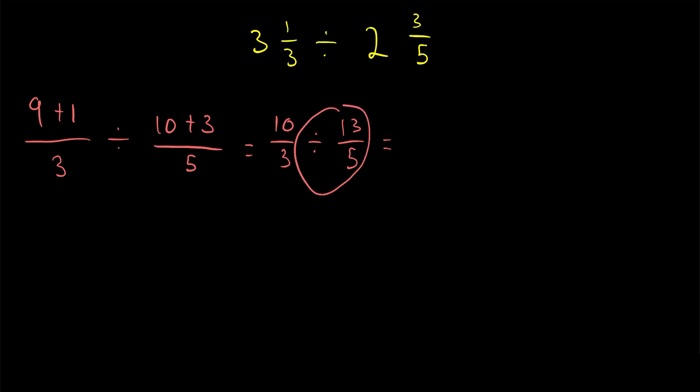Then dividing by a fraction, as we went over, is the same as multiplying by the reciprocal. So this equals 10/3 times 5/13. We multiply across the numerators and denominators, which gives us 50/39. 50 and 39 have no common factors, so this is as simple as we're going to get. And that is 3 1/3 divided by 2 3/5 as an improper fraction.